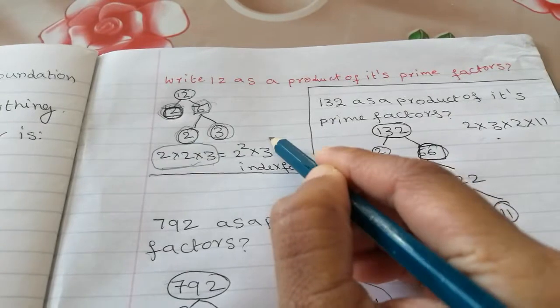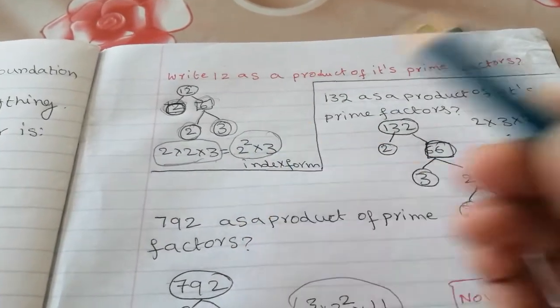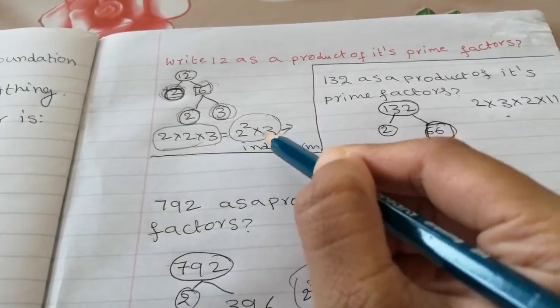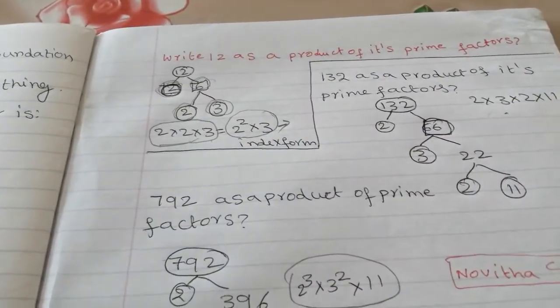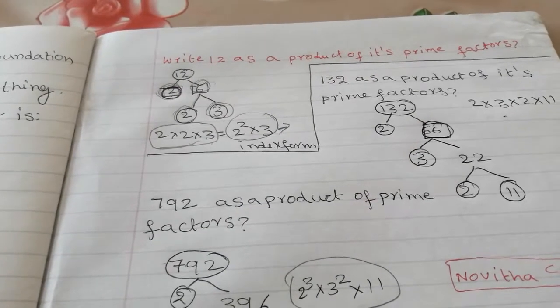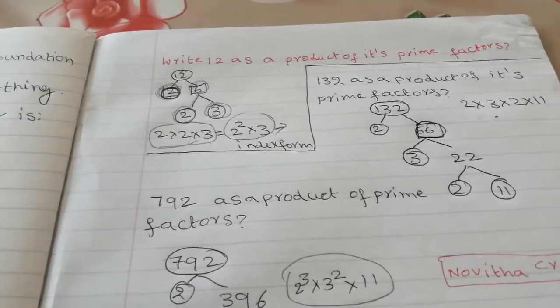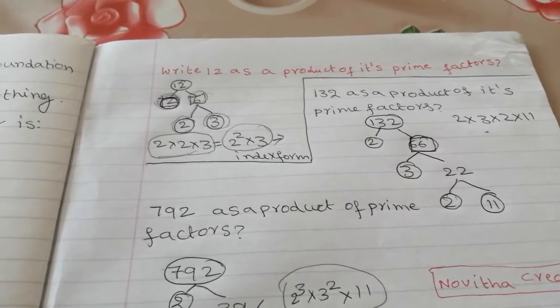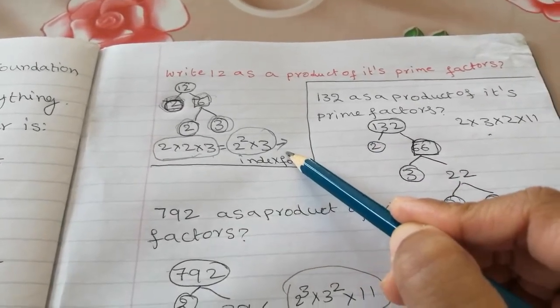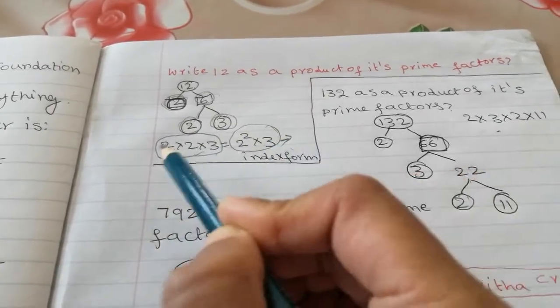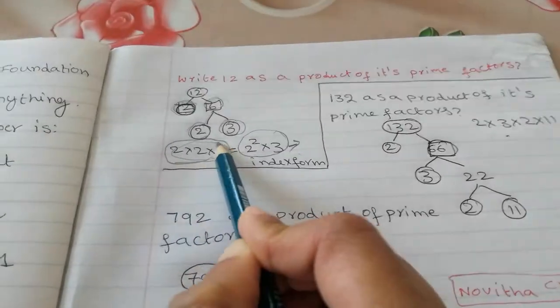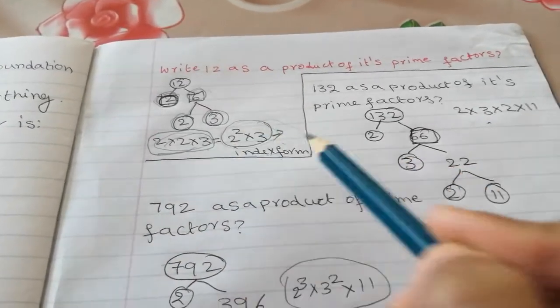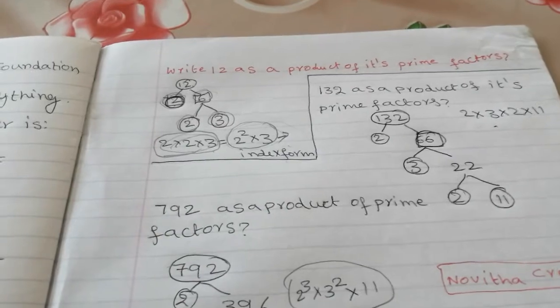And if the examiner asks about to write in an index form, you need to give this form. You can see indices in my previous video: Indices, powers, square roots and cube roots. How to write index form. So as long as you give this answer is okay. But if they ask for index form, then you must have to present with powers.